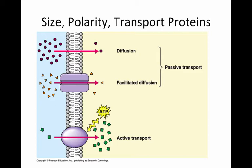What determines what goes in a cell and what does not? Things diffuse or are actively transported across this membrane based upon size, based upon charge or polarity, and based upon whether or not they must be actively transported and whether or not transport proteins are there if necessary.